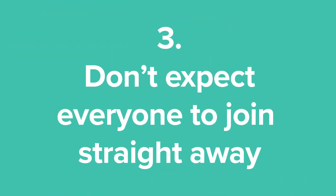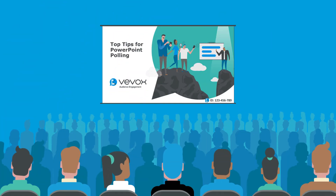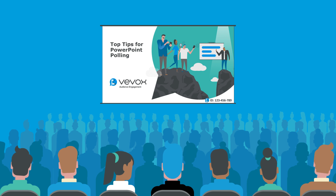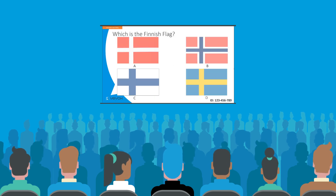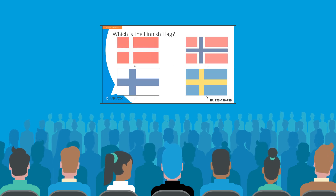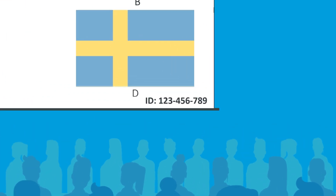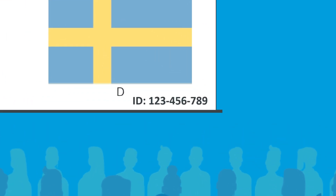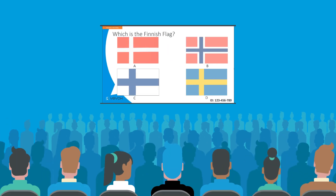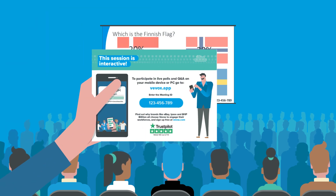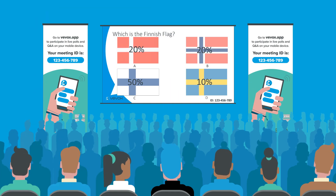Tip 3: Don't expect everyone to join straight away. This is one of the most important tips we can offer. Once the introduction slide and instructions are gone, it's vital that the joining instructions are available for those that didn't log in at the start. The easiest way to do this is to include them on every slide using PowerPoint's Slide Master. An alternative is to leave printed instructions on seats or place instructional banners next to the presentation screen.